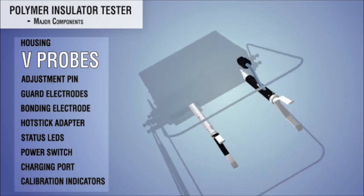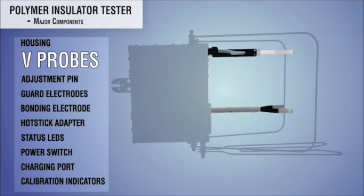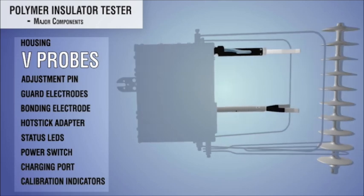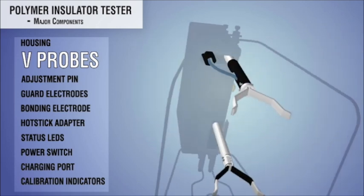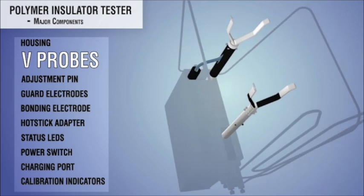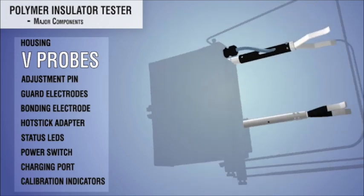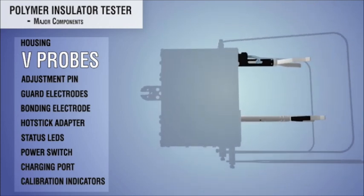The instrument has two forked V-probes that come in contact with the insulator sheath. One probe is at a high voltage when making a measurement, and the other probe is grounded. The grounded probe has a sensor embedded in it. Both probes are spring-loaded to enable the operator to ensure contact with the insulator and initiate the measurement.